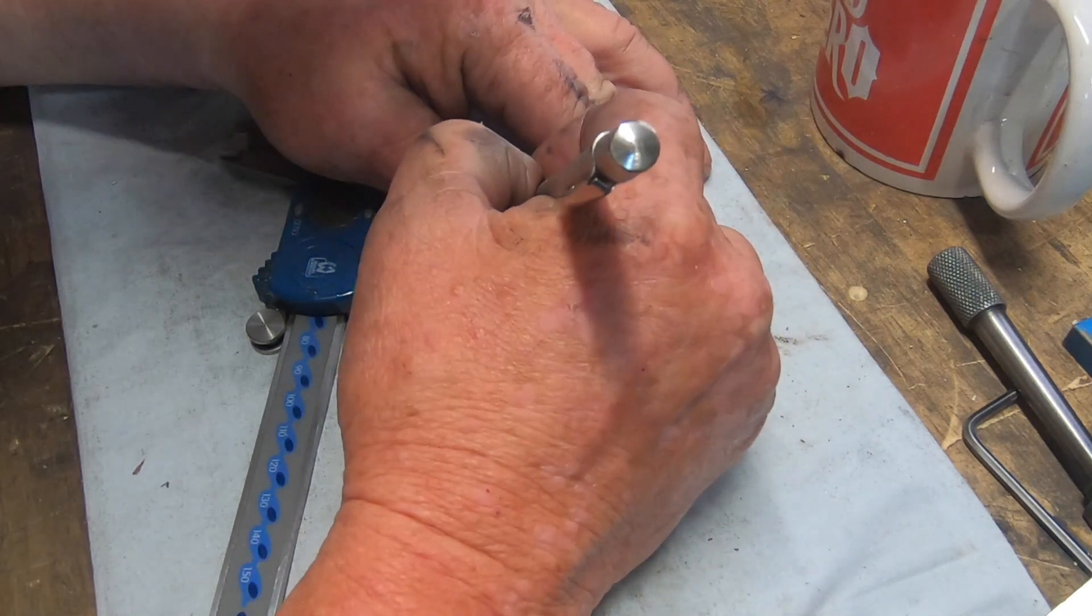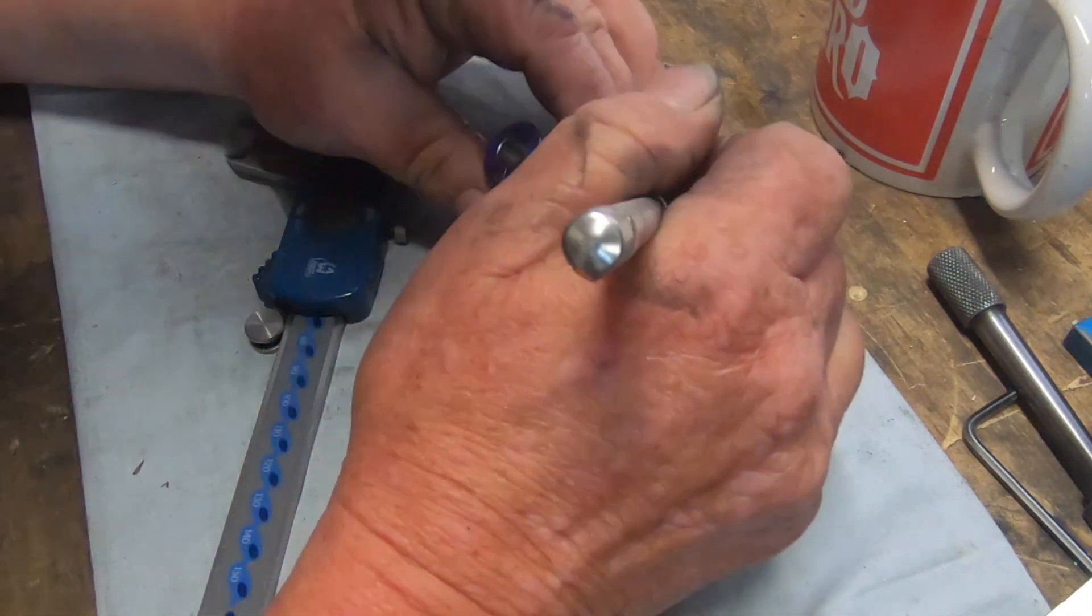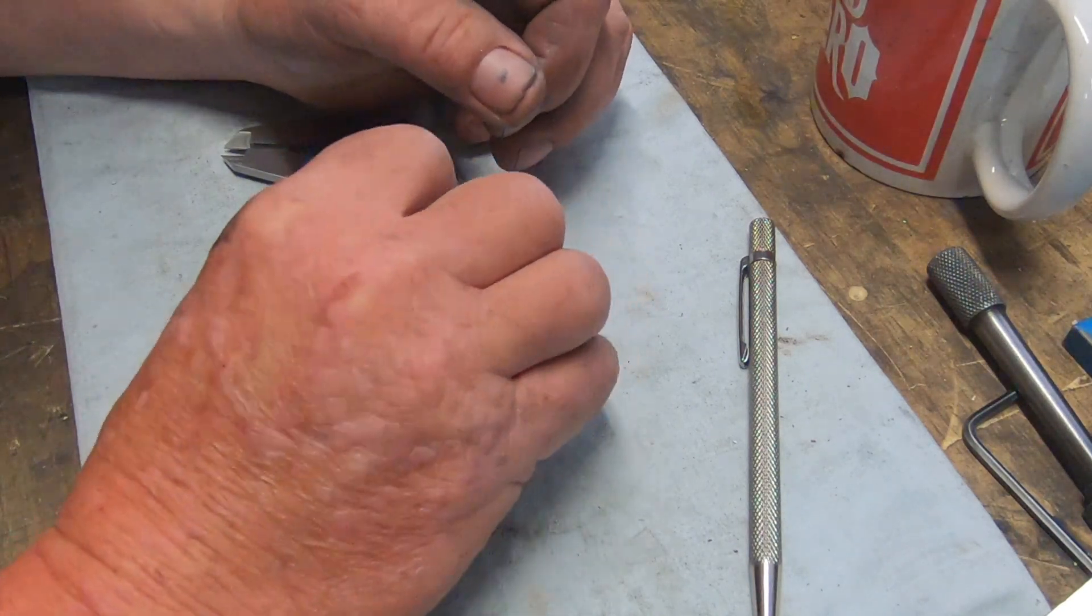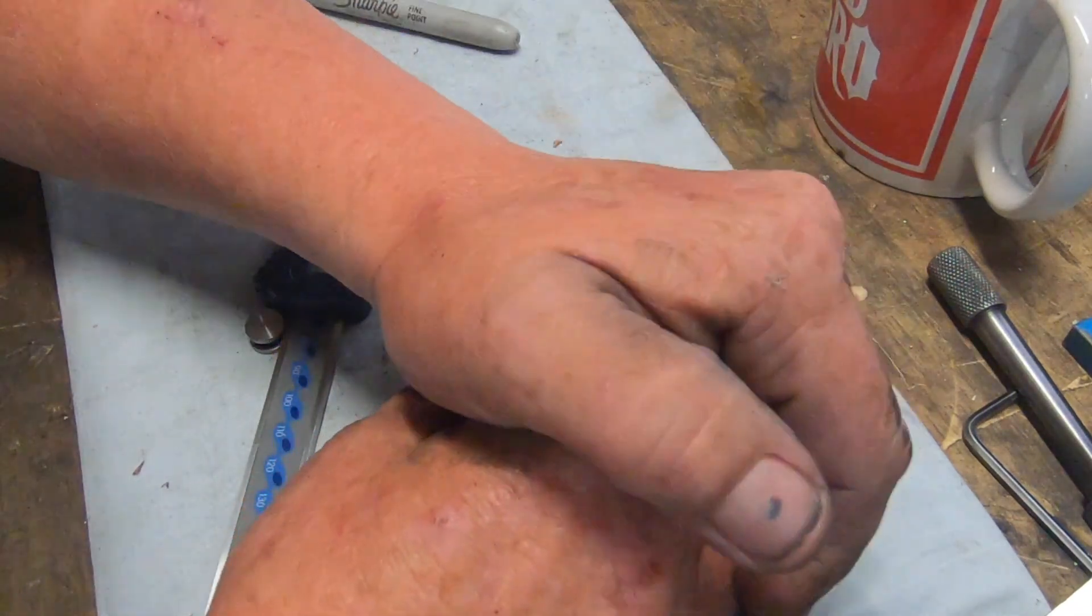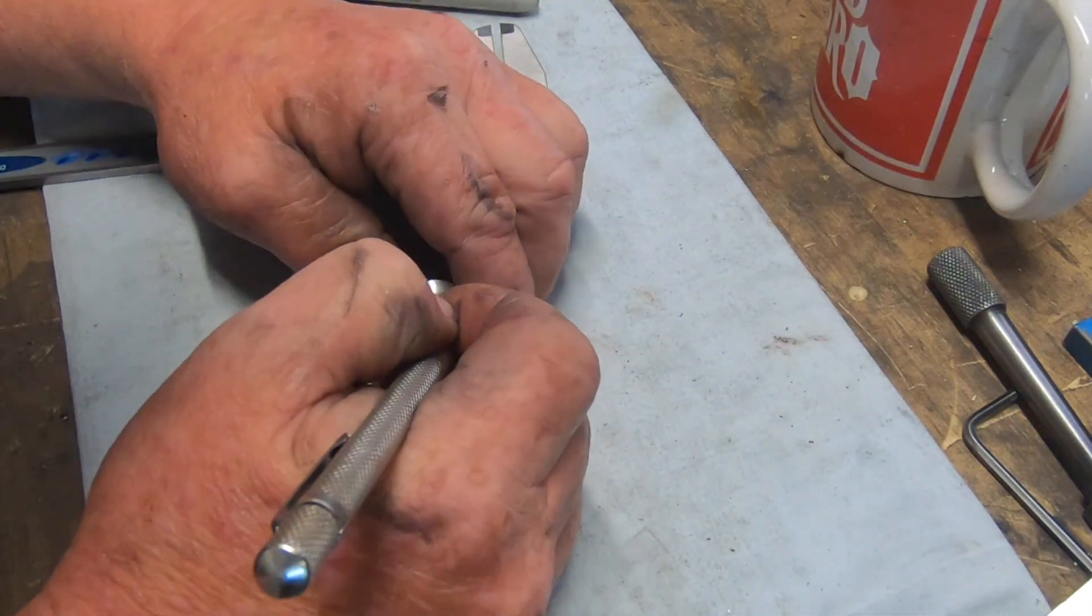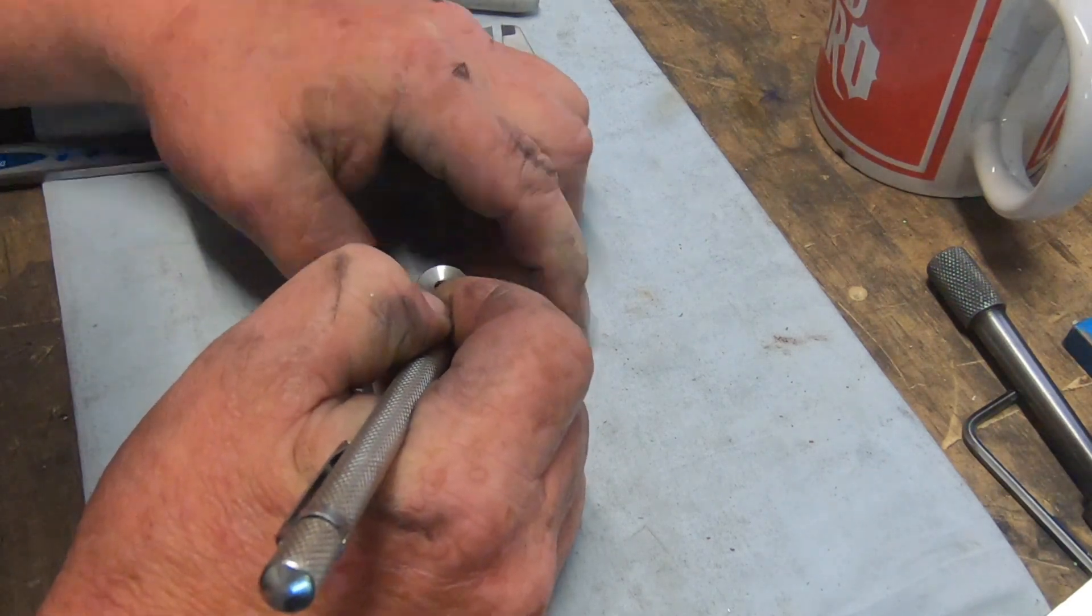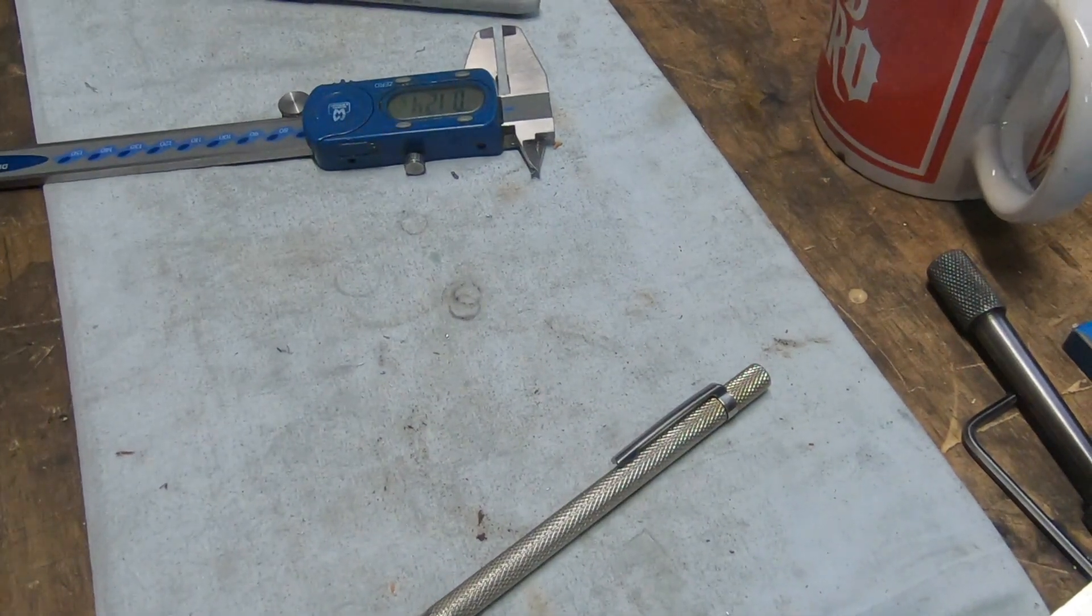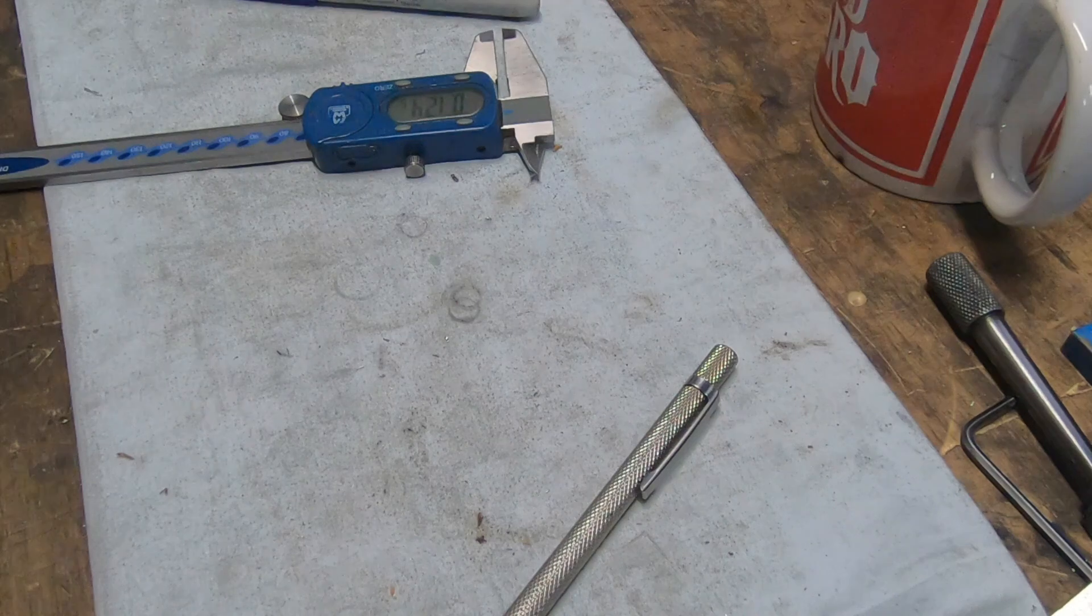It was 125 thou. Now put the bung in. Now I scribe around that. Now I've got to try and get that bung out. Right, that's out.